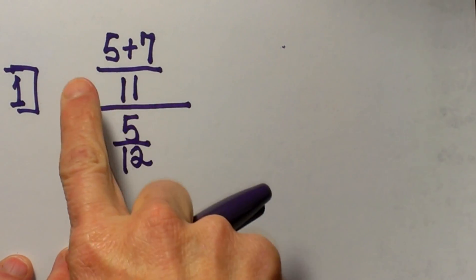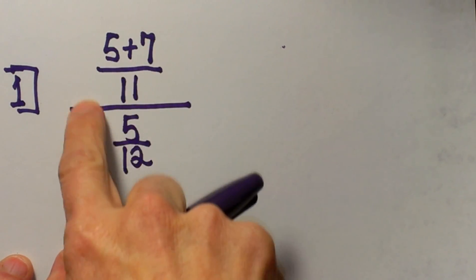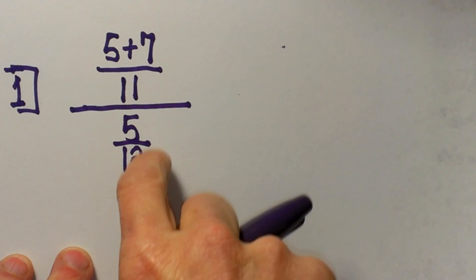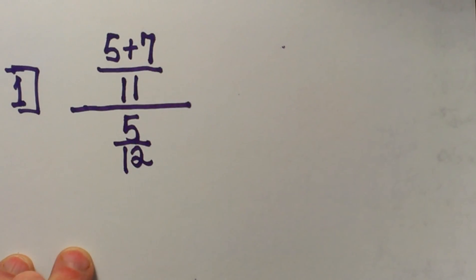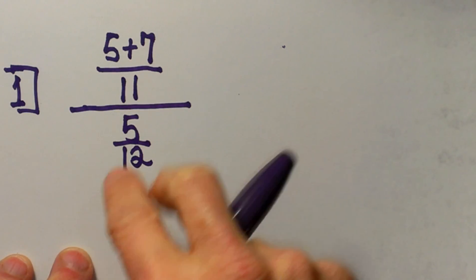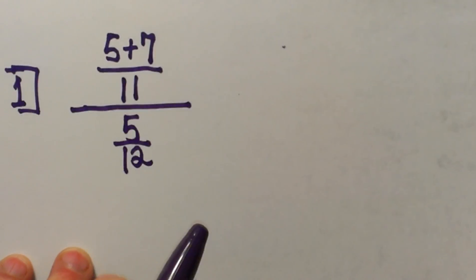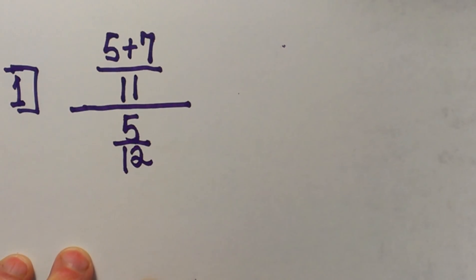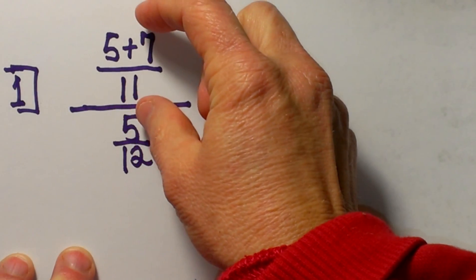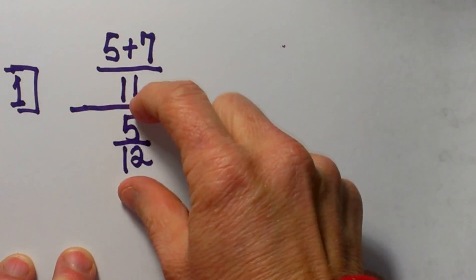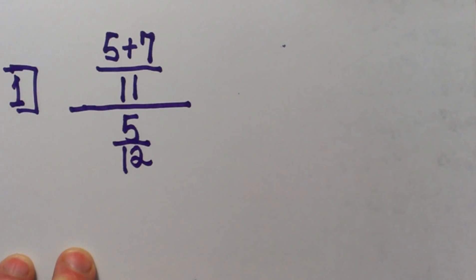Today we are going to look at how to simplify complex fractions. We have a fraction on top of another fraction and we are going to learn how to simplify these. It looks kind of fancy. I call this the double decker, where you have a fraction over a fraction — and that is a double decker.